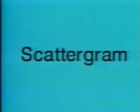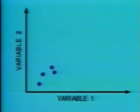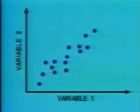A scattergram is used to test for possible cause and effect relationships, making clear whether a correlation exists and the strength of it.